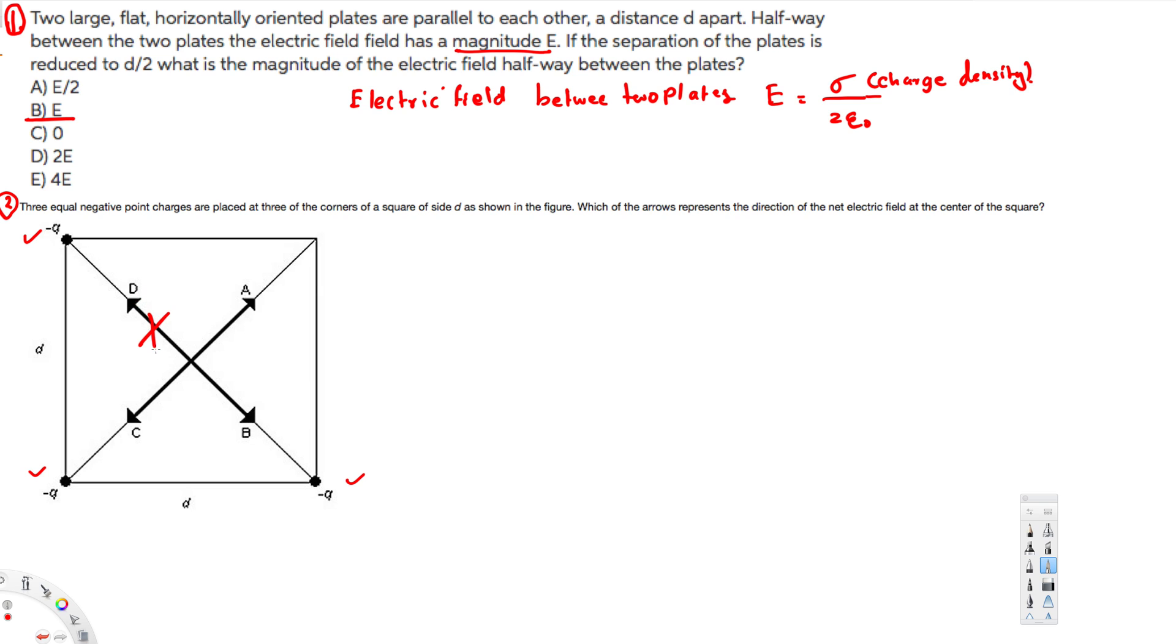two will cancel each other. They are the same values, so they will cancel each other—same values in opposite directions cancel. In this direction we don't have anything. Here we have this negative q, so it's going toward the negative. For a